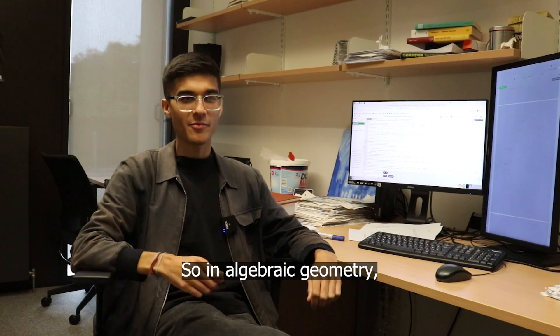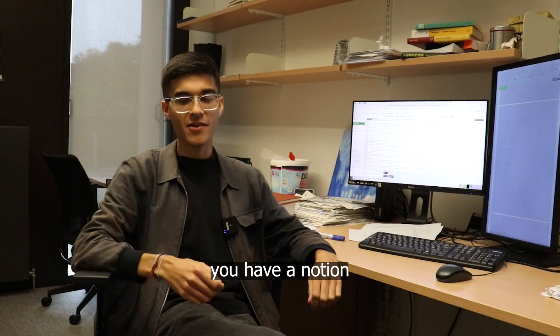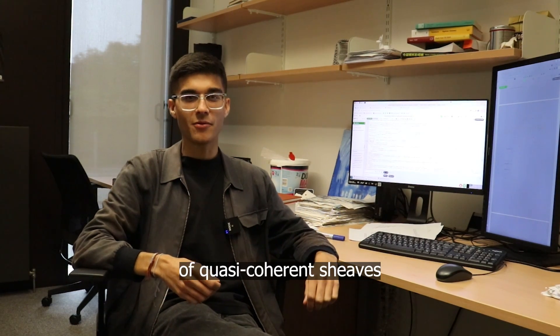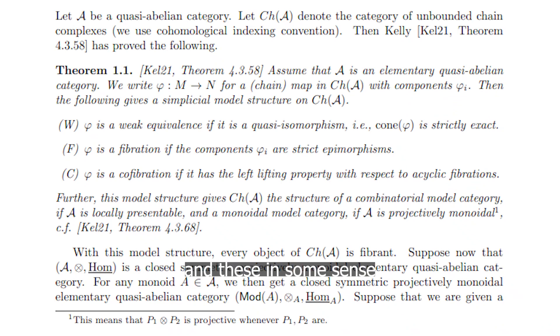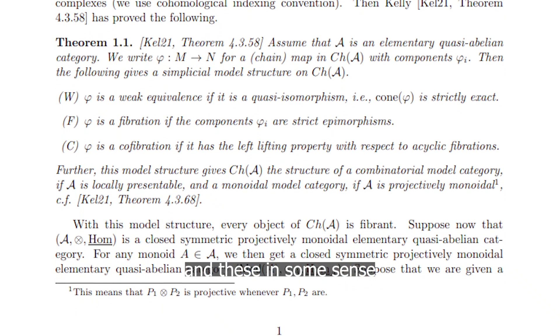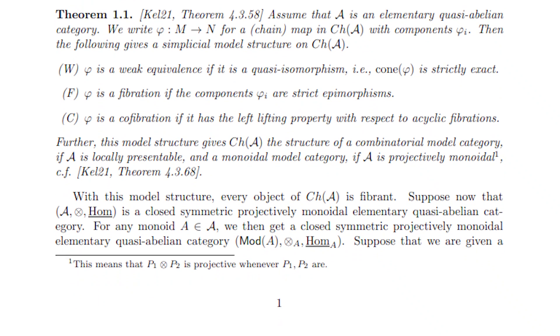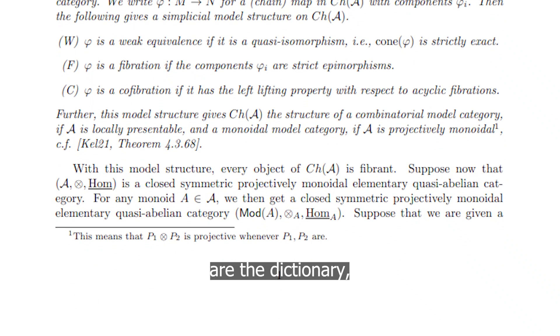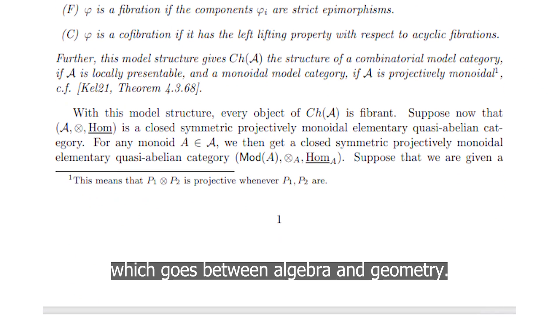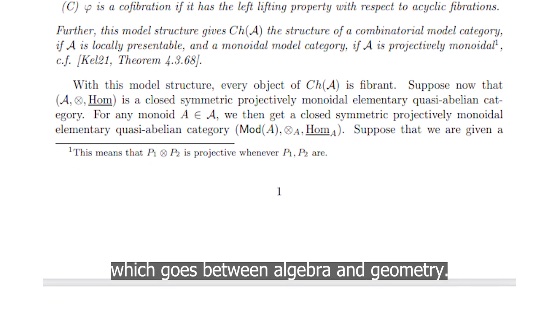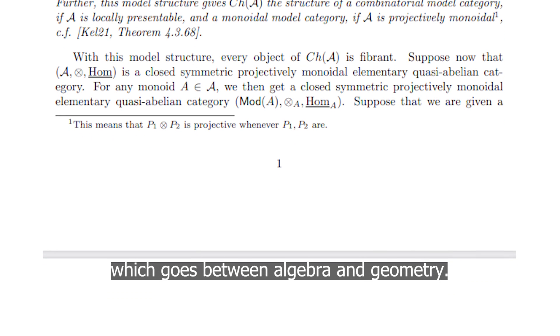In algebraic geometry you have a notion of quasi-coherent sheaves, and these in some sense are the dictionary which goes between algebra and geometry.